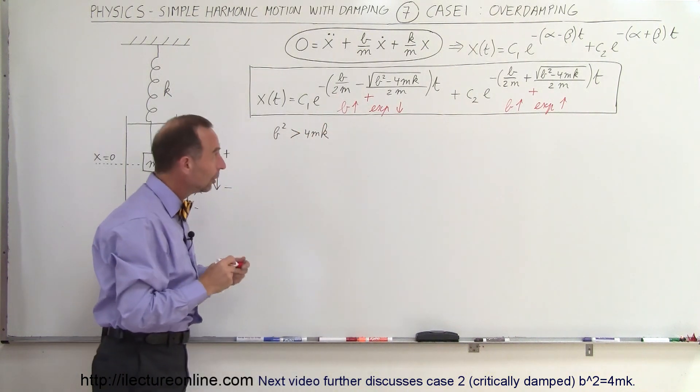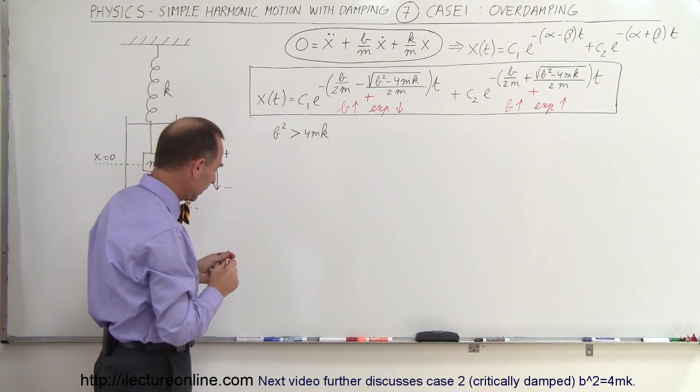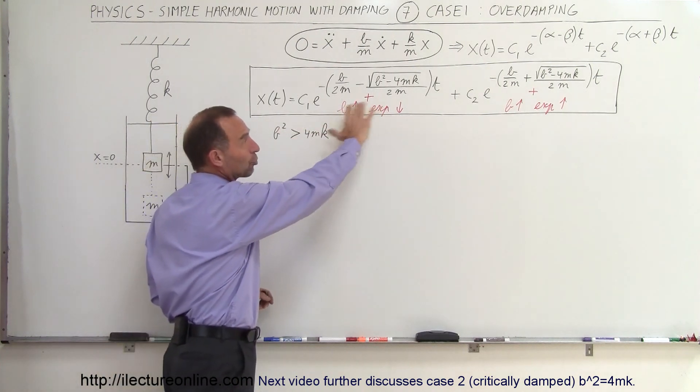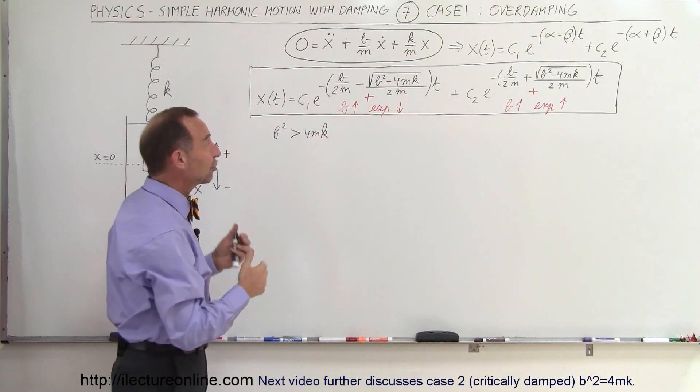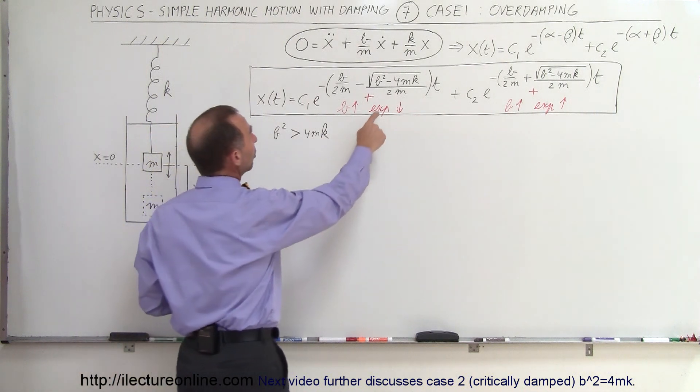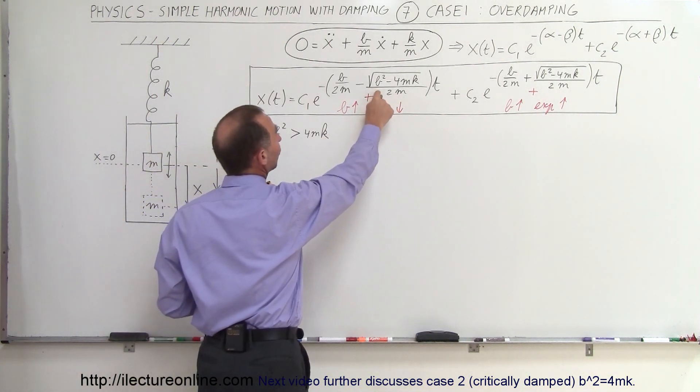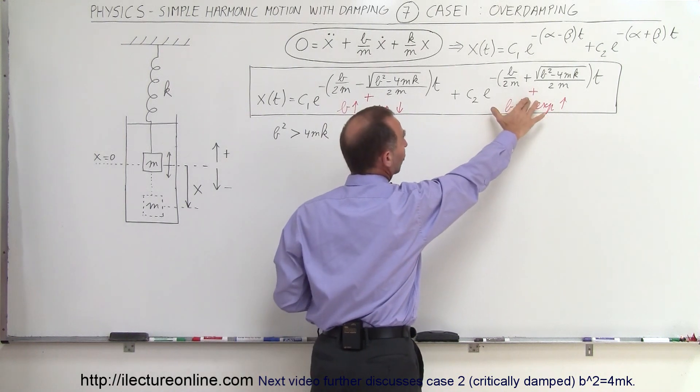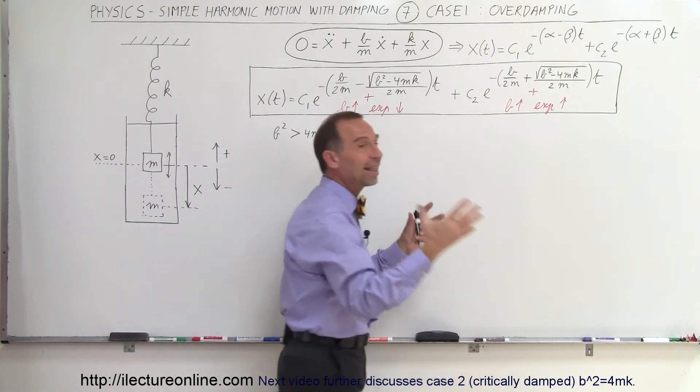So understanding that now, coming back over here, we want to interpret that. You can see that there's no oscillatory motion at all. These are simply decaying exponentials. This will cause, since the exponent here is very small, the decay will be very small. And since this is a larger exponent, the decay will be larger, and then they're added together.